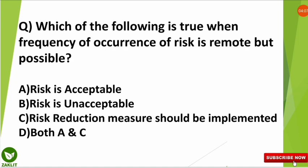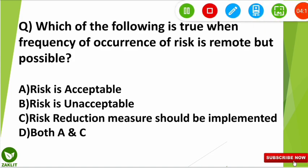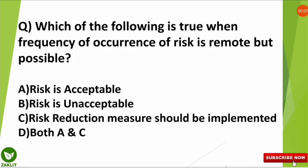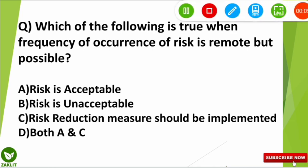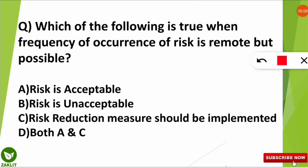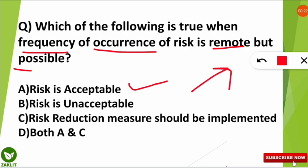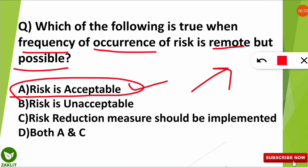The next question: which of the following is true when the frequency of occurrence of risk is remote but possible? The correct option is option A — risk is acceptable. According to risk management, when the frequency of occurrence of risk is remote, meaning the hazard is distant but possible, we can accept that risk. Option B suggesting both A and C is incorrect — only option A is the correct answer.